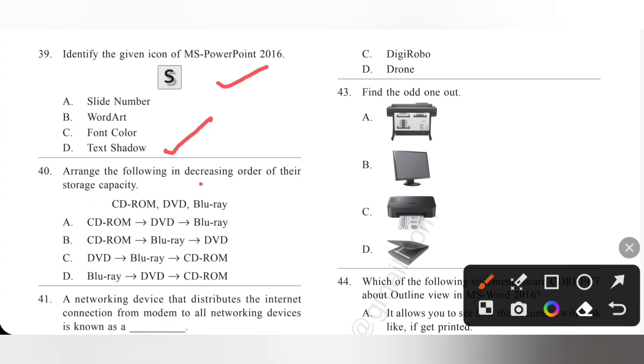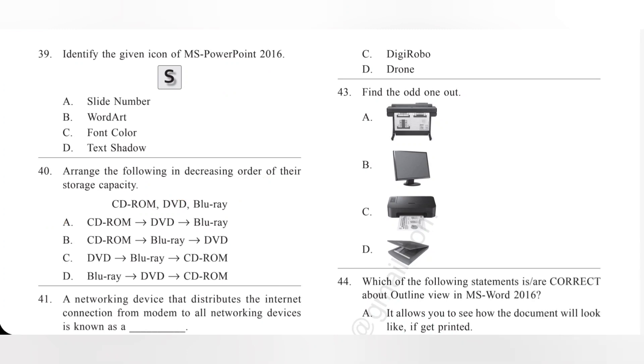Question 40: Arrange the following in decreasing order of their storage capacity. Decreasing order. So, first CD-ROM, then DVD, next Blu-ray. 1, 2, 3. So, option A is the correct answer. CD-ROM, DVD and then Blu-ray.